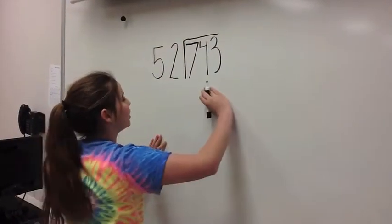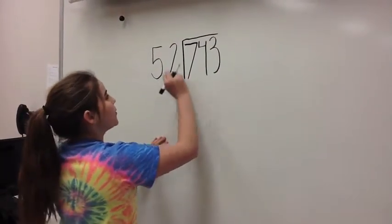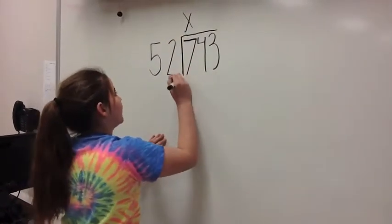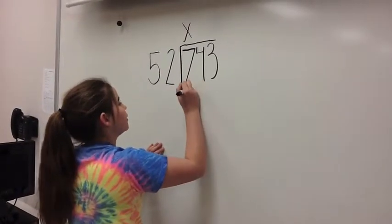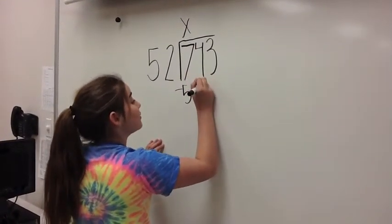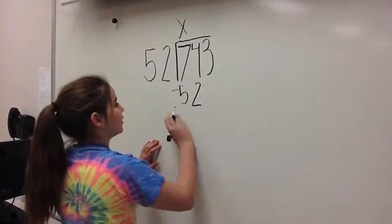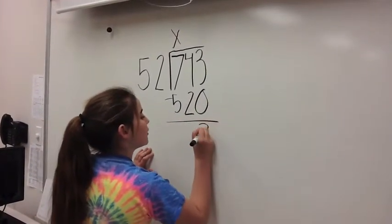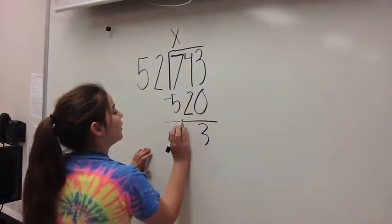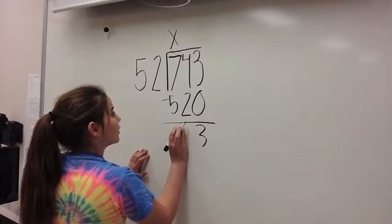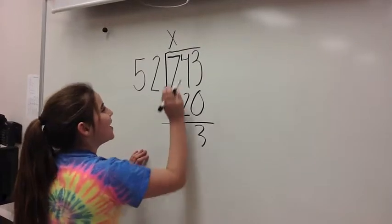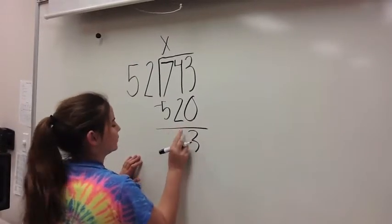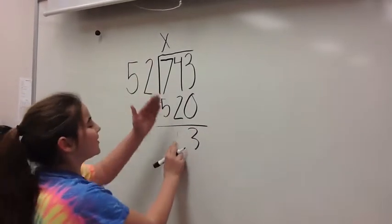I'm dividing 743 by 52. So 52 can't go into 7, so I put an X up there. And then you subtract 52 from 740, which this would really be 520. So you can drop 3, and then 2 goes into 4 twice. Sorry, I'm getting confused.